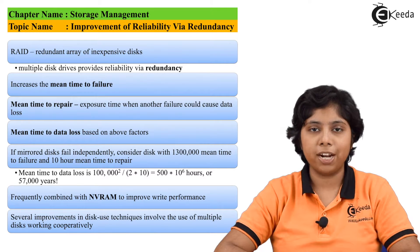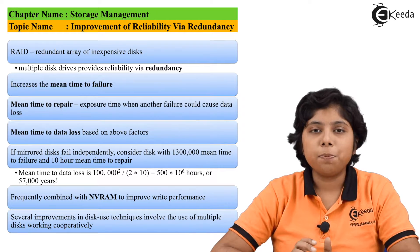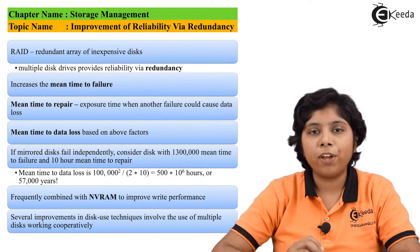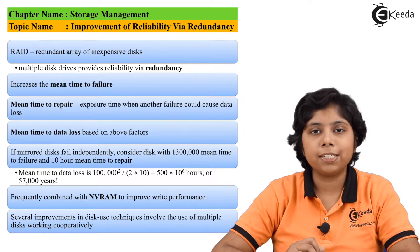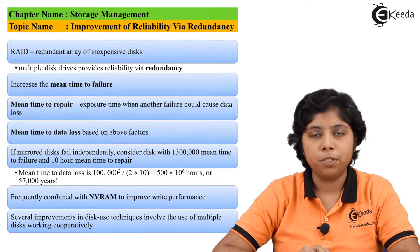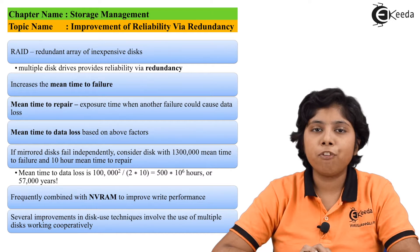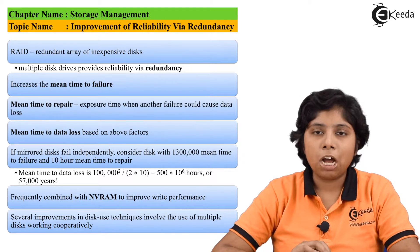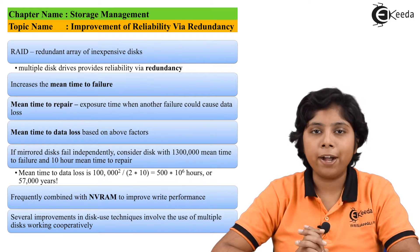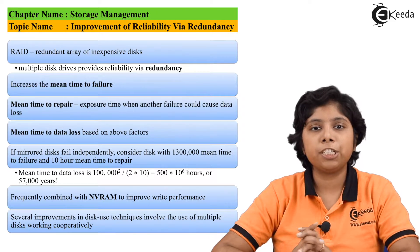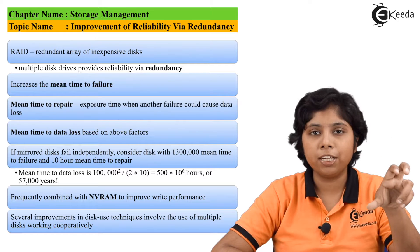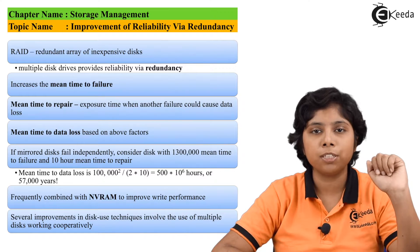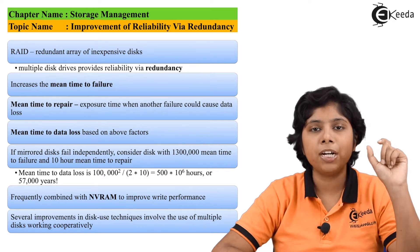The chance of a disk failure in a set of N disks is obviously higher than for a single specific disk. The mean time to failure for a specific disk is 1 lakh hours. If we consider an array of 1000 disks and that set experiences a failure, the mean time to failure reduces to 1 lakh divided by 1000, which equals 100 hours.